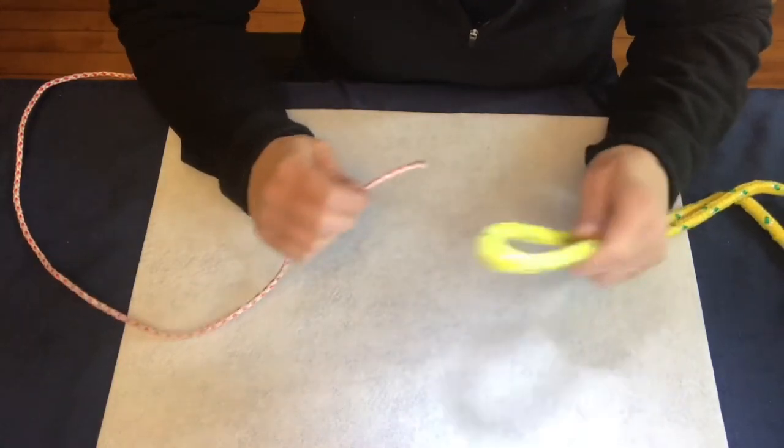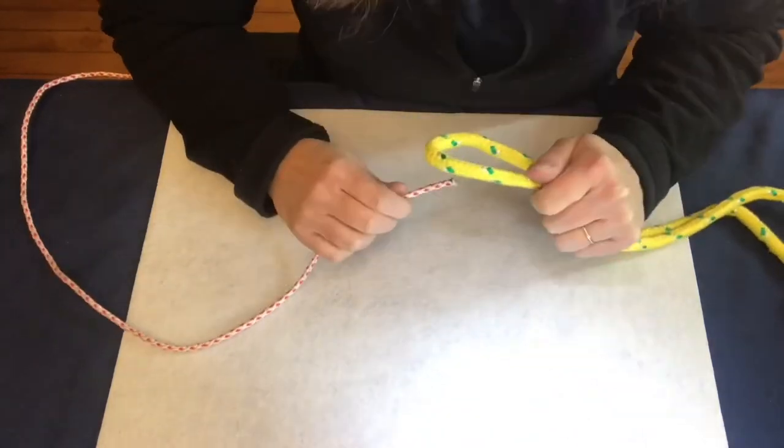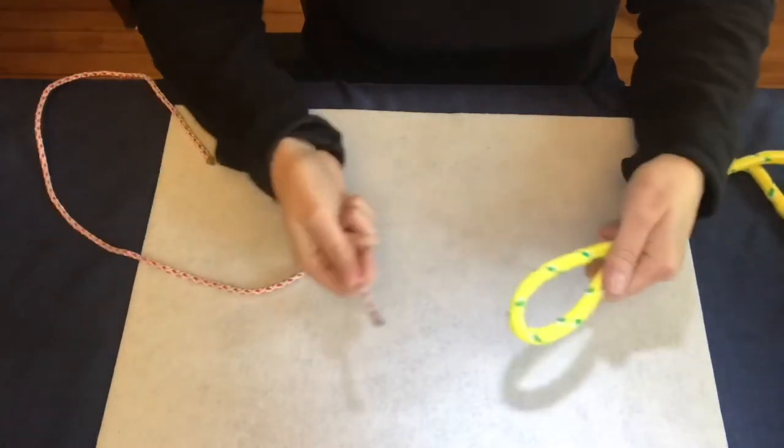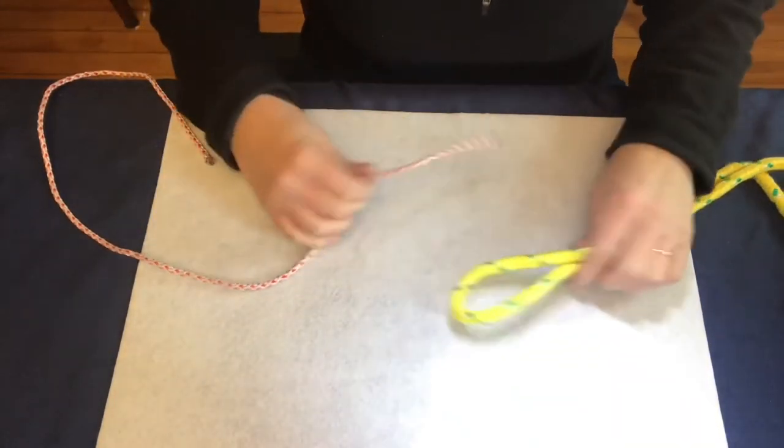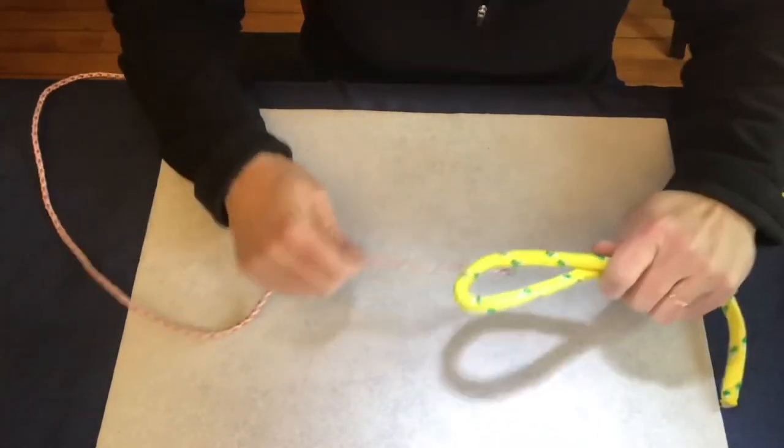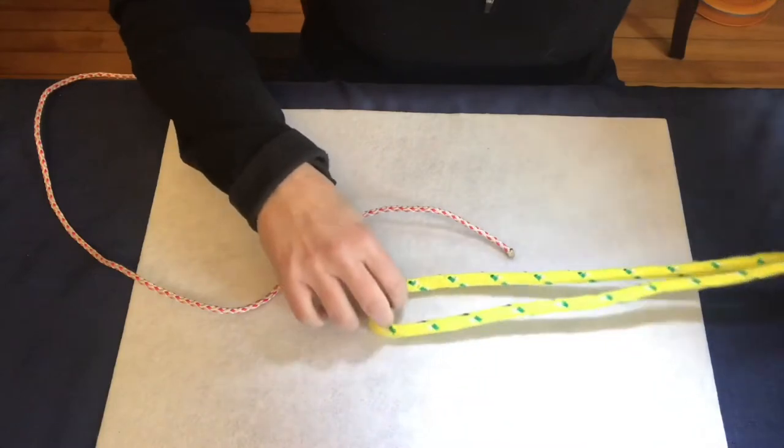It is easy to tie and it's also easy to untie. If any of the running rigging on a ship needed to be connected to another line, this is what was commonly used. So we have two different ropes. Let's say one is not long enough to do the job, so you can join them together with the sheet bend knot.